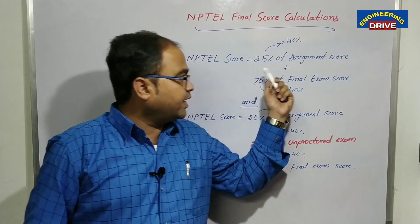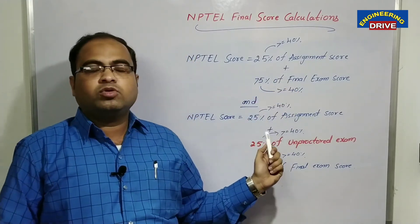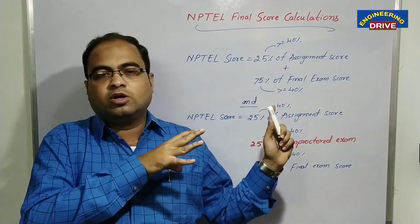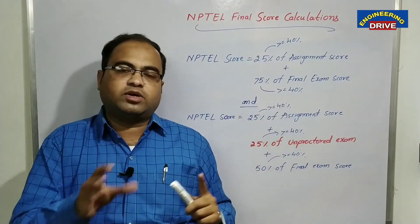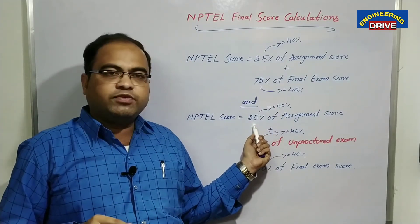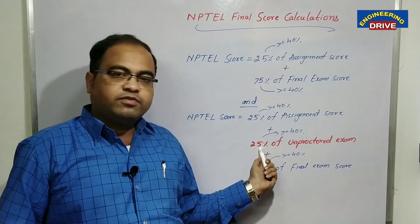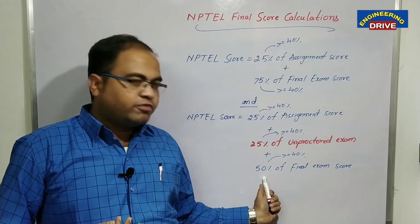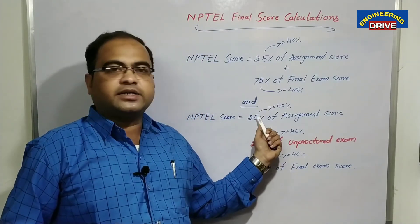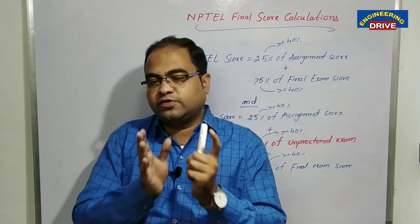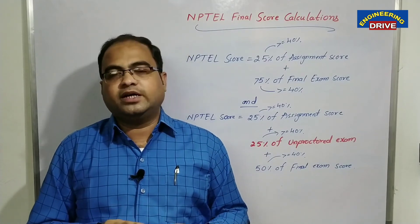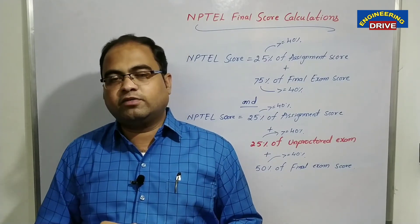These are the Type 1 and Type 2 ways of calculating the NPTEL final exam score — the two present models NPTEL uses to calculate final marks. For Type 2, if you take 40% of 25 marks, the minimum is 10. From the unproctored exam (also 25 marks), minimum is again 10. From the final exam at 50 marks, 40% minimum is 20. So in total, 10 plus 10 plus 20 equals 40 marks. If you get these 40 marks, you are treated as having passed the NPTEL final exam and you will receive your certificate of completion.